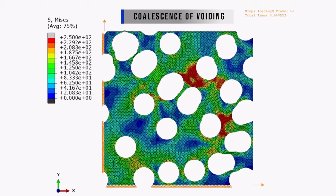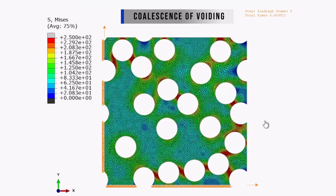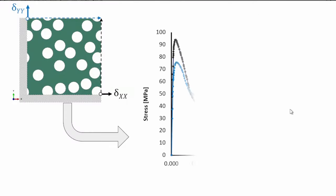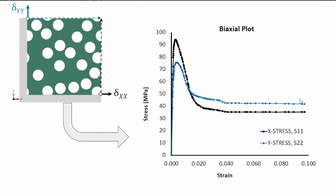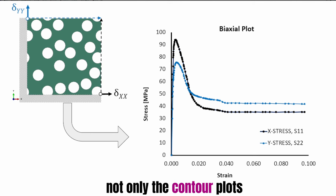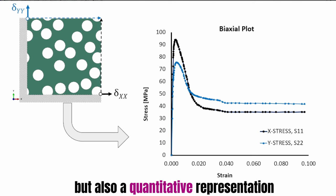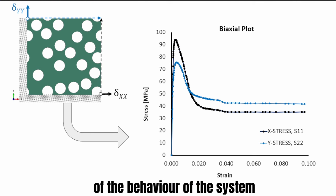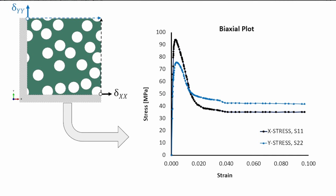These are the kinds of things this simulation is useful for assessing — for example, the coalescence of voids. I'm going to show you how to do this in this video. At the end, I'll also show you how to generate a biaxial plot based on a stress-strain representation of the same system, so we have not only the contour plot but also a quantitative representation of the system's behavior.